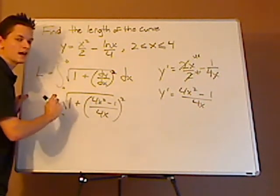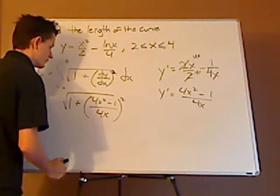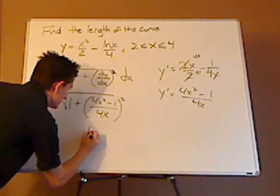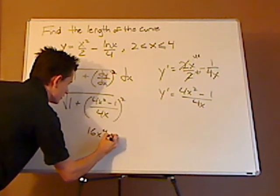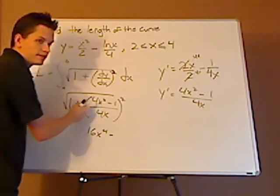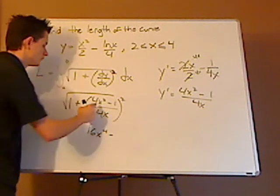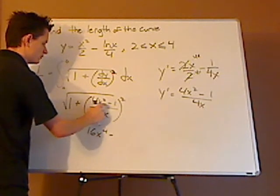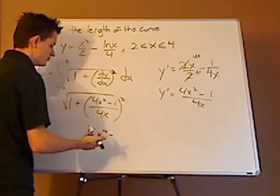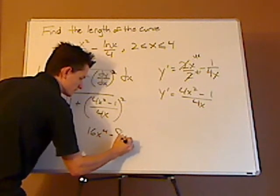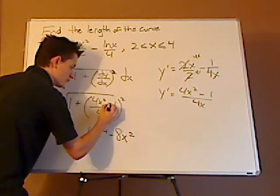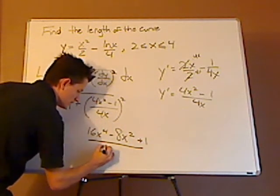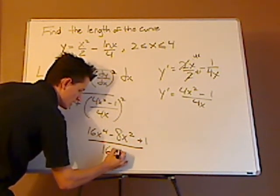So I have 1 plus 4x squared minus 1 over 4x, and that whole thing is being squared. So when I'm squaring a fraction, I square the numerator and I square the denominator. So that's going to become 16x to the 4th minus, and this is what's called a perfect square. So what you can do is take this, multiply these two, and then double it, which is going to give you 8x squared. The square of this gives you a plus 1 over 16x squared.